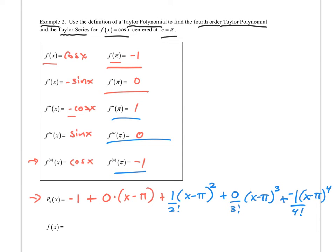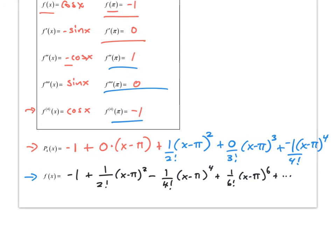When we write the Taylor series, we do the same thing but continue on forever, disregarding the zero terms. That's the Taylor series for cosine of x centered around pi. That distinction — being centered at pi rather than zero — makes a difference in these expressions.